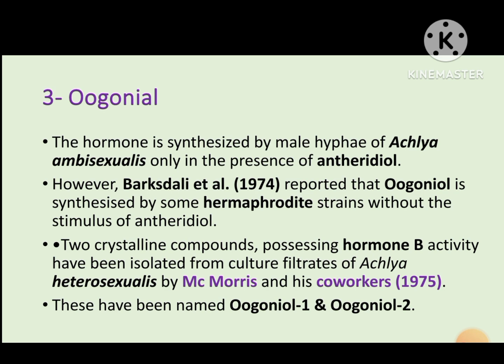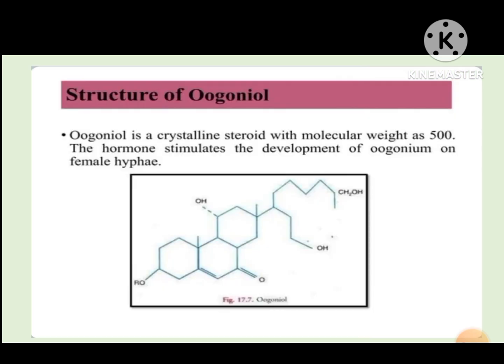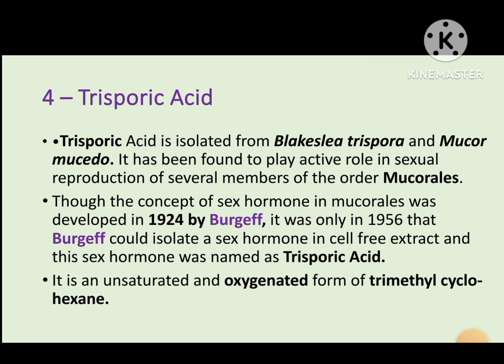Oogoniol was first reported by Barksdale from Achlya ambisexualis. Two crystalline compounds possessing hormone B activity have been isolated from the cultural filtrate of Achlya heterosexualis, done by McMorris and co-workers. Oogoniol was also subdivided into Oogoniol 1, Oogoniol 2, and others. Its molecular weight is 500.